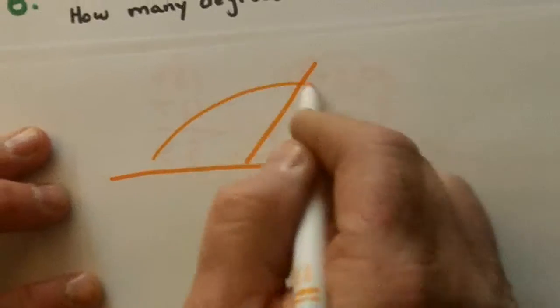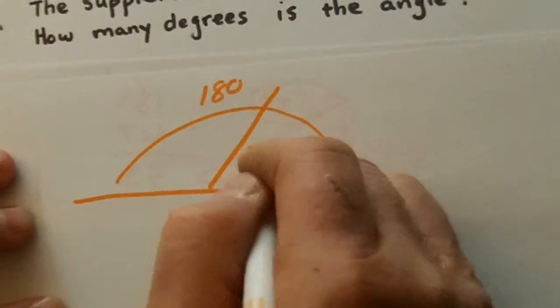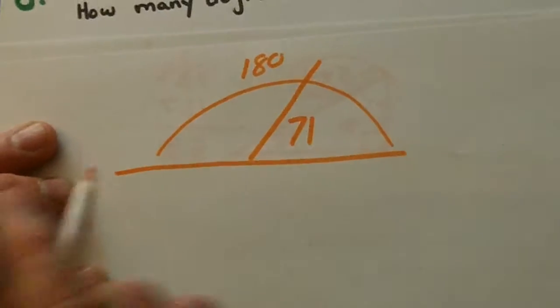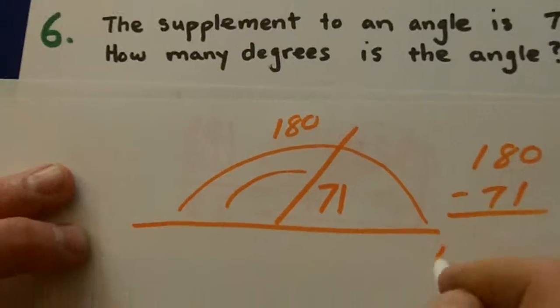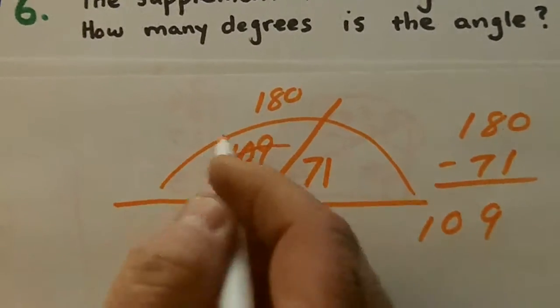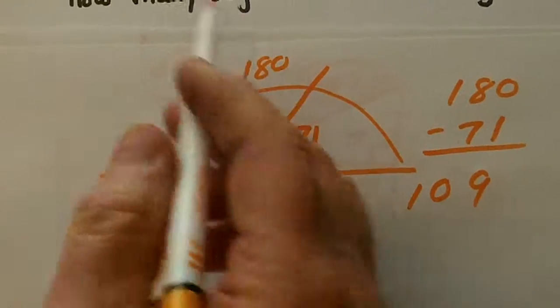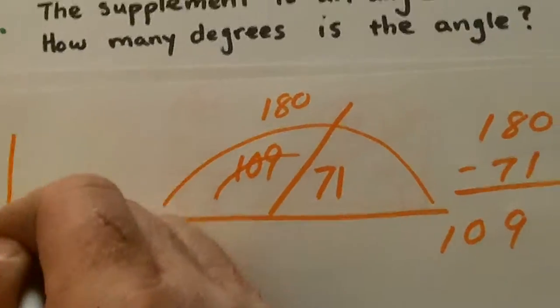...are two angles that equal 180. Now the smaller one is 71, and so this bigger angle is 180 minus 71, is 109. But the key here is to know that supplementary is 180, because if you thought supplementary was 90, that's for a complement.